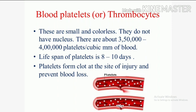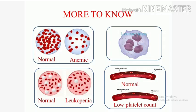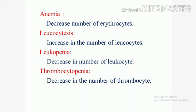You can understand this clearly by the illustrative diagram. A normal person's blood smear shows a normal RBC count. In an anemic person, RBC count is already reduced. An increased number of leukocytes beyond the maximum normal range is called leucocytosis. A decreased number of leukocytes below the minimum range is called leucopenia. A decreased number of thrombocytes is called thrombocytopenia. Anemia means decreased number of erythrocytes. Leucocytosis means increase in the number of leukocytes. Leucopenia means decrease in the number of leukocytes. Thrombocytopenia means decrease in the number of thrombocytes.